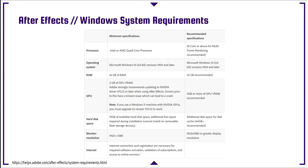The first thing we're going to look at is what Adobe actually says about After Effects and which specs you should be considering. Right at the top it says we need an Intel or AMD quad-core processor as a minimum, but the recommended is an 8-core or above for multi-frame rendering. This basically means the more cores you have in your CPU, the more After Effects can take advantage of your computer's performance.